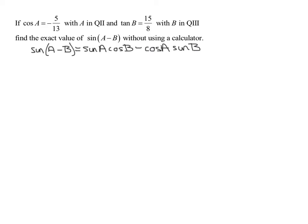In order to use this formula I need to know the sine of A and the cosine of A. Unfortunately I only know the cosine of A. I need to find the cosine of B and the sine of B. I only know the tangent of B. So I think what we need to do in each case is draw the angle in standard position and find X, Y, and R for both angles.